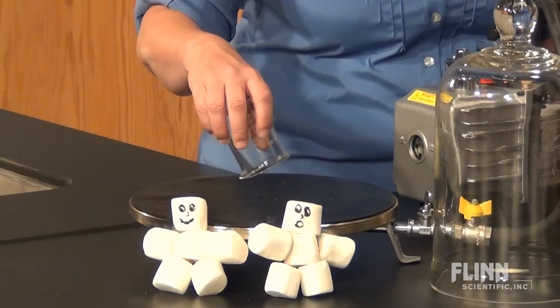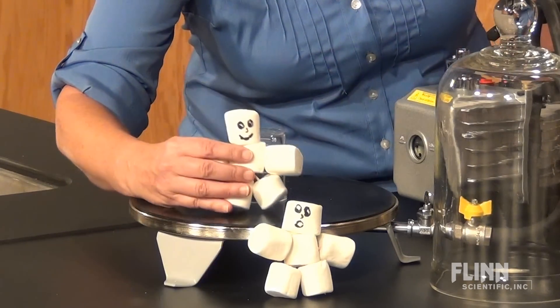Place a beaker upside down over the opening in the vacuum plate and put the marshmallow figure next to the beaker.